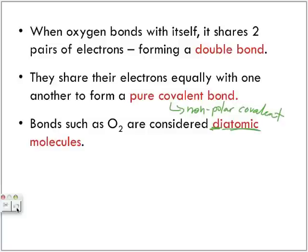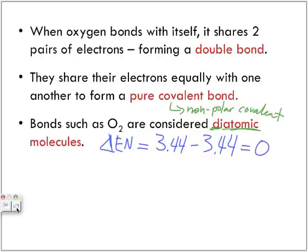What is the electronegativity number of oxygen? We're going to calculate the change in electronegativity. Oxygen's electronegativity is 3.44. Subtracted by itself, that gives us zero. Anytime we subtract something from itself, we get zero — just like having five apples and taking them all away leaves zero apples.